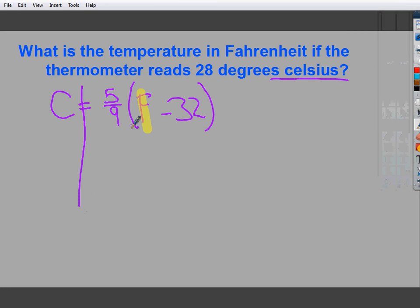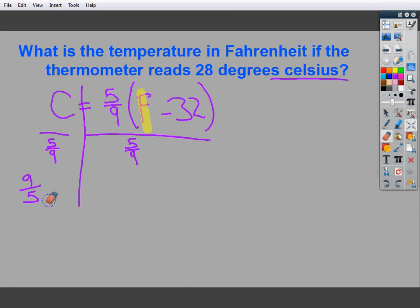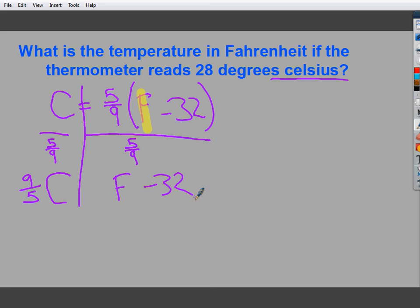This whole term in parentheses is multiplied by 5 ninths. In order to get rid of that, I'm going to divide by 5 ninths. And, in case you have forgotten, if you divide by a fraction, you actually multiply by its reciprocal. So, I'm going to do 9 fifths times C, the reciprocal. I drop down the Fahrenheit minus 32, which means in order to get the Fahrenheit by itself, I need to add 32. So, my new formula with Fahrenheit in a place that I can use it would be 9 fifths times the Celsius temperature plus 32 equals my Fahrenheit temperature.